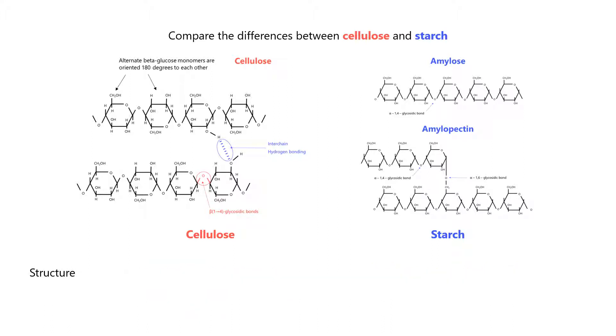Next, let's compare their structure. Cellulose is a long, straight chain. Amylose is a helical strand and amylopectin is a branched molecule.